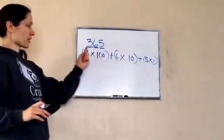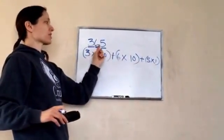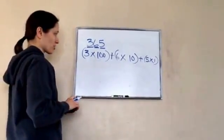3 times 100 is 300. 6 times 10 is 60. And 5 times 1 is 5. 365. Okay, remember that? Well, guess what you're going to learn to do today?